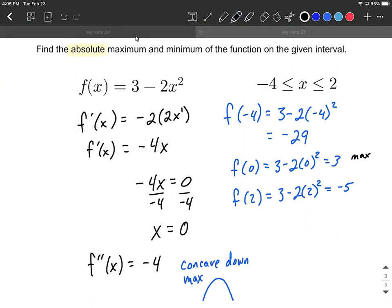Kind of what we said with the second derivative test, we get a maximum at 0, that critical value. But then the very smallest is going to be -29, which is further negative than -5. So this is going to be our absolute minimum occurring at -4.